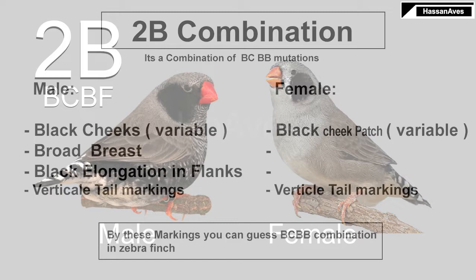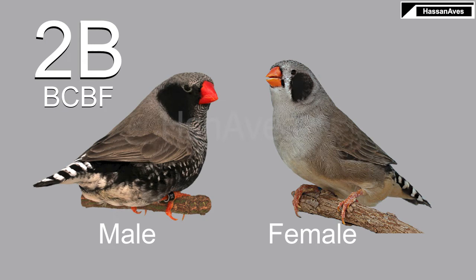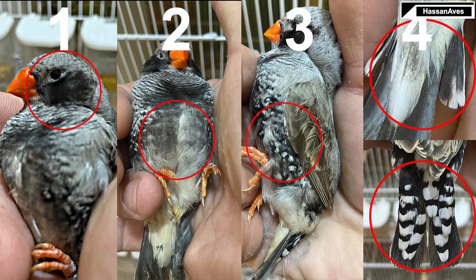This is the black cheek and black face combination, also known as 2B. In this combination, you can easily identify 2B by the highlighted markings. In the first picture you can see black cheek and black face together in this bird, which is the indication of both mutations together.